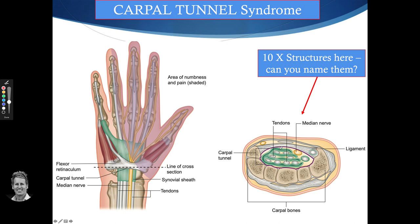The median nerve can basically get compressed within the carpal tunnel for many reasons. One reason is repetitive strain injury, where the flexor tendons are encased in a synovial sheath. When you have tenosynovitis, the sheath becomes swollen due to overactivation, which reduces the space around the median nerve and subsequently irritates it, producing carpal tunnel syndrome.